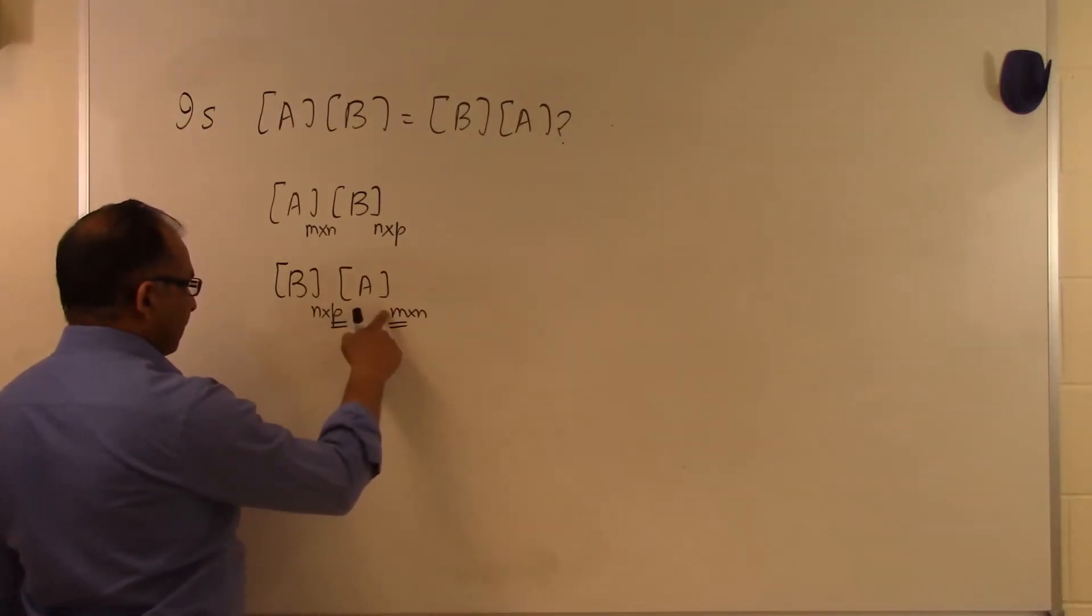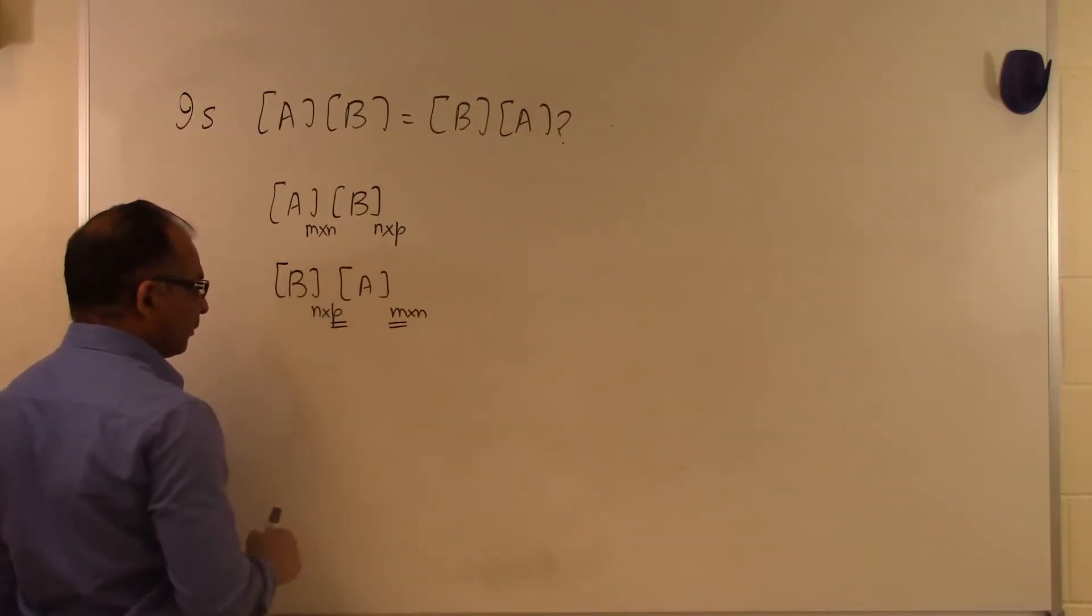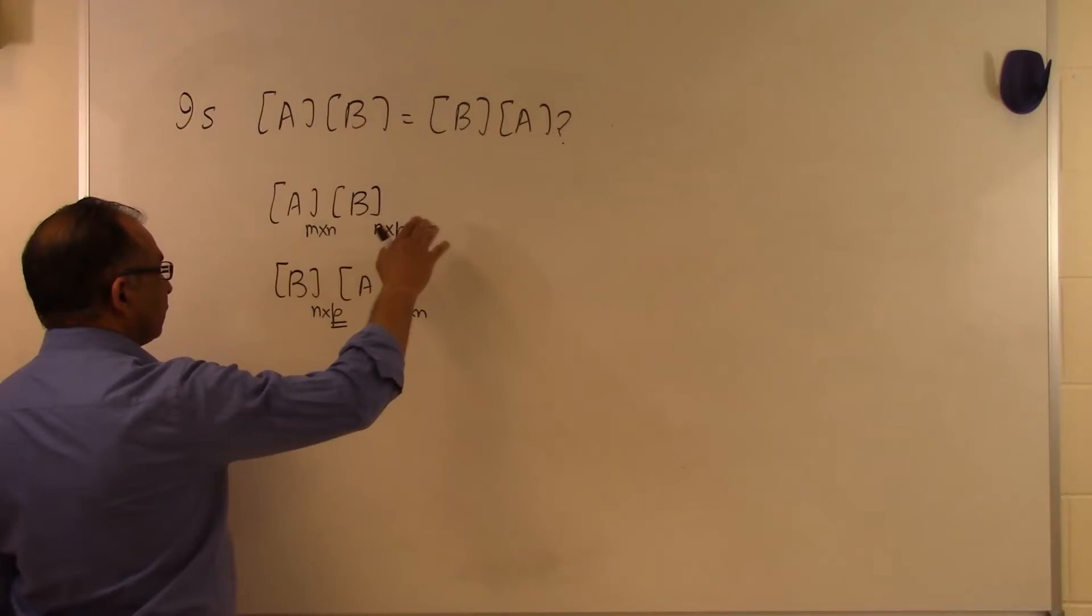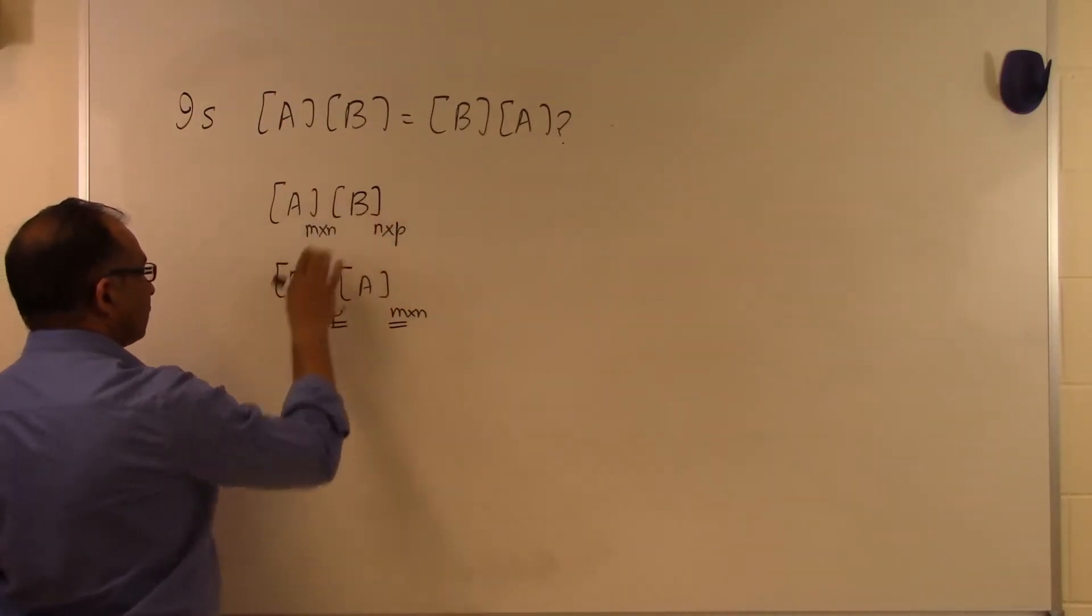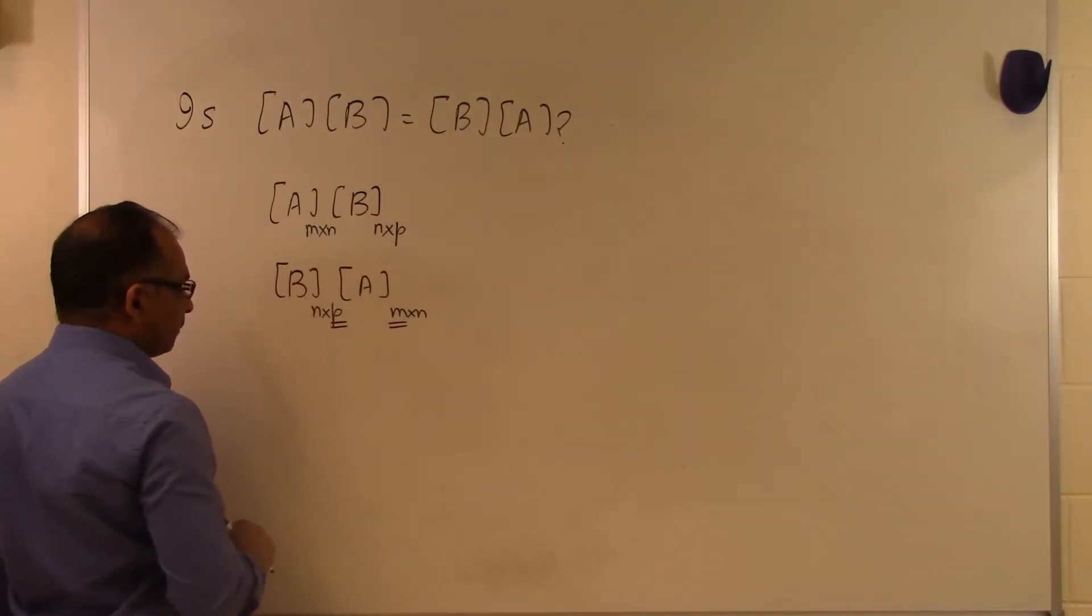So if P is same as M, then the size of the matrix B has to be squared and A also has to be squared and they have to be the same dimension. Only then is there a possibility that A times B will be the same as B times A.